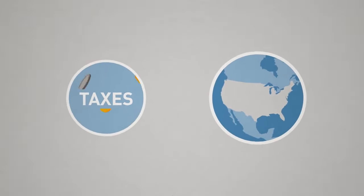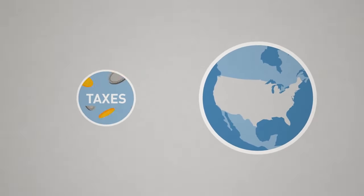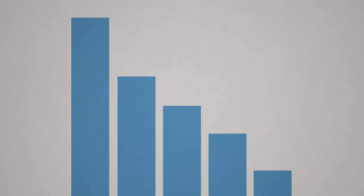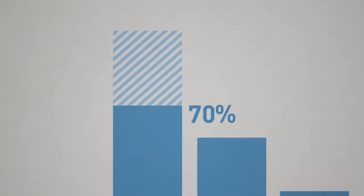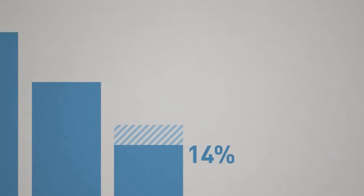Tax cuts contributed significantly to the incredible growth of the 1960s. The top and the bottom rate of the federal income tax both went down by nearly 30%. The top rate from 91% to 70%, and the bottom rate from 20% to 14%.